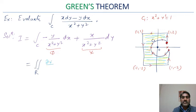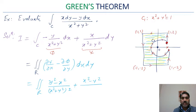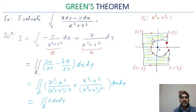We need to calculate ∂Ψ/∂x and ∂Φ/∂y. Computing these partial derivatives — which we have done several times in previous lectures — ∂Ψ/∂x = (y² − x²)/(x²+y²)² and ∂Φ/∂y = (x² − y²)/(x²+y²)². These two terms cancel each other: (y²−x²) + (x²−y²) = 0.